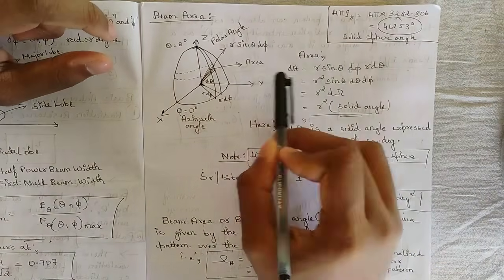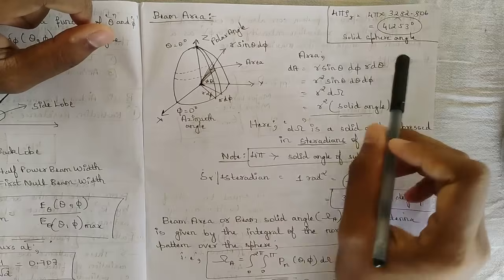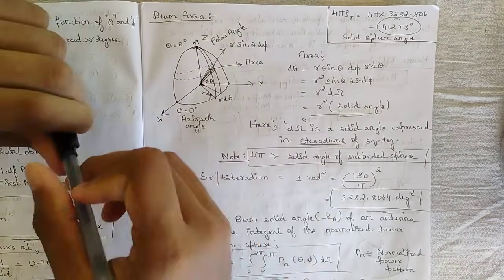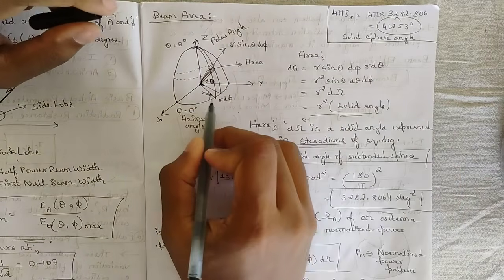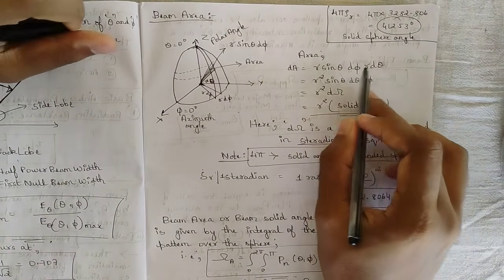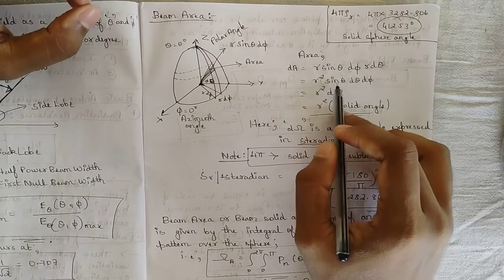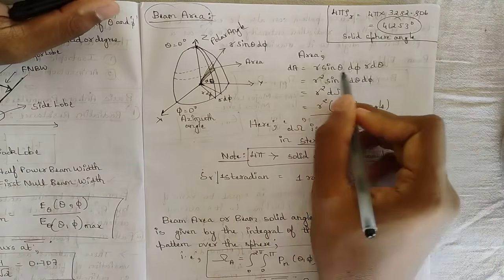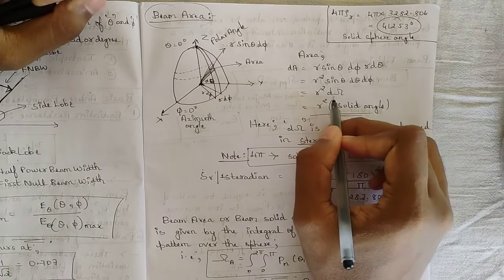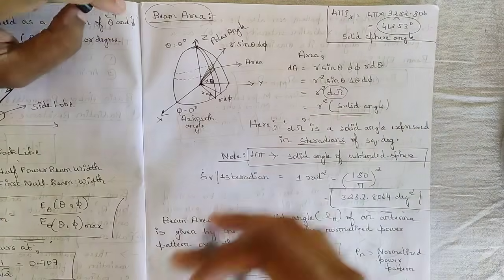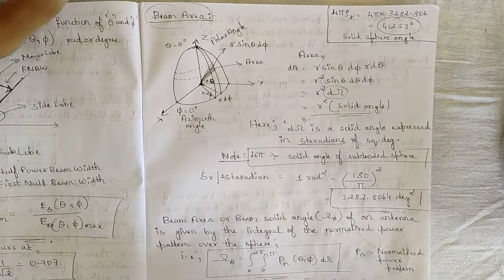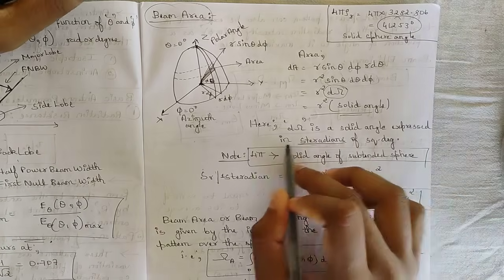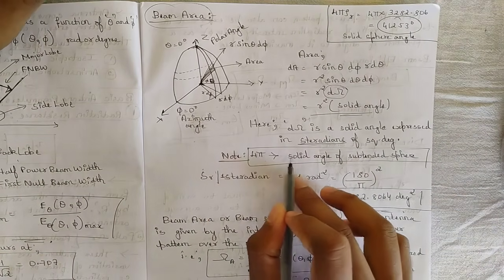The area of the shaded region, represented as dA, is given by r sine theta d phi times r d theta. Here, d theta and r d phi are the two sides, so writing them as r sine theta d phi times r d theta means r squared gets multiplied, giving r squared sine theta d theta d phi. The term sine theta d theta d phi is simply called the beam area, represented as d omega, where omega is the symbol — not the ohm symbol. d omega is the variable beam area; integrating it gives the actual beam area, omega_A.